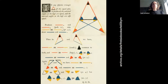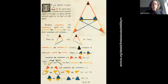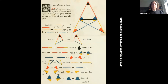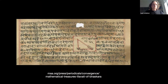Jumping forward in time quite a bit, this is from the 1800s — unlike the papyrus — but again it's Euclid. The title of this book by Oliver Byrne is 'The First Six Books of the Elements of Euclid in Which Colored Diagrams and Symbols Are Used Instead of Letters for the Greater Ease of Learners.' This work is in the public domain. You can find copies online, and it's nice to read alongside a piece of more traditional Euclid.